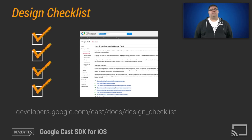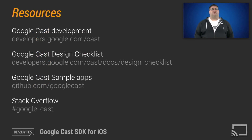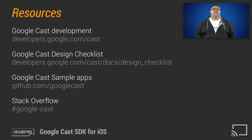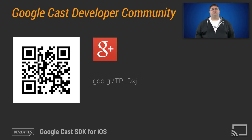To help you implement the best practices, we have provided a series of checklist items with full descriptions and pictures. You can get more details about the Google Cast SDK at developers.google.com/cast. Don't forget to take a look at the Cast design checklist. You can find several example apps at github.com/googlecast. Feel free to post your developer questions to Stack Overflow using google-cast. You can also join the Google Cast developers community on Google Plus for pro tips and to share your experience. It's now up to you to go and create a great iOS Google Cast sender. Happy Casting.